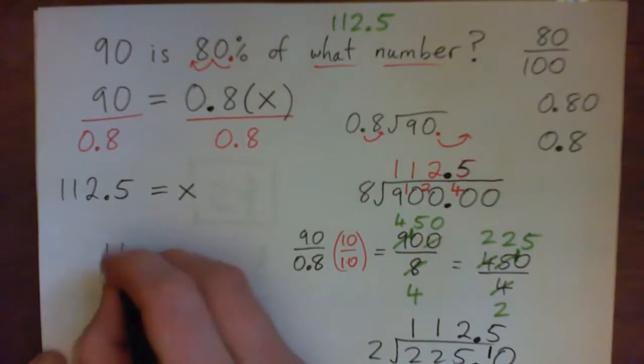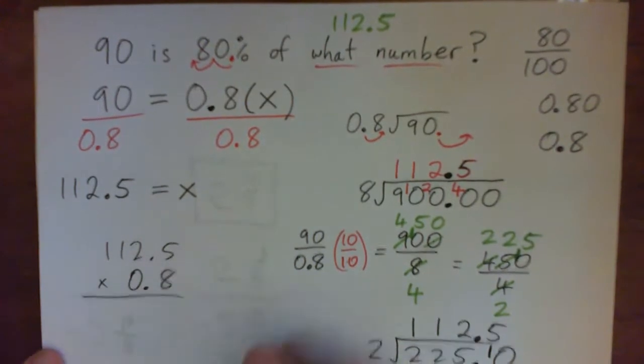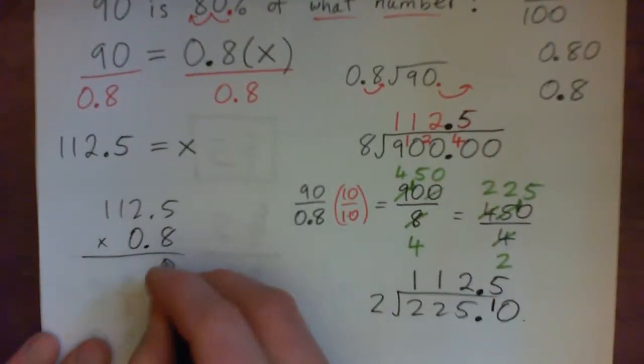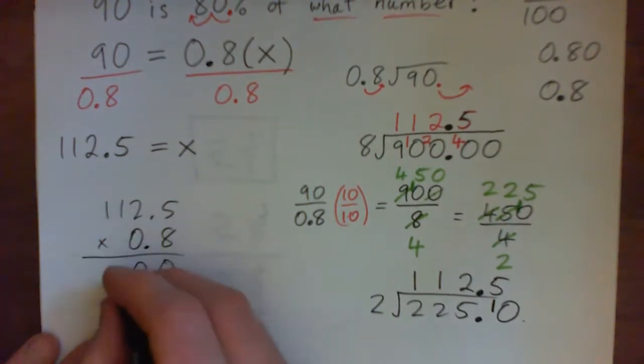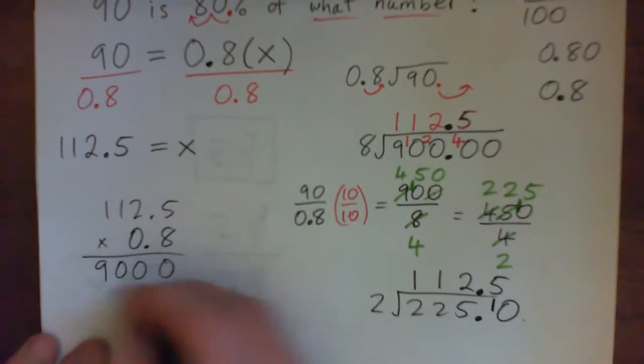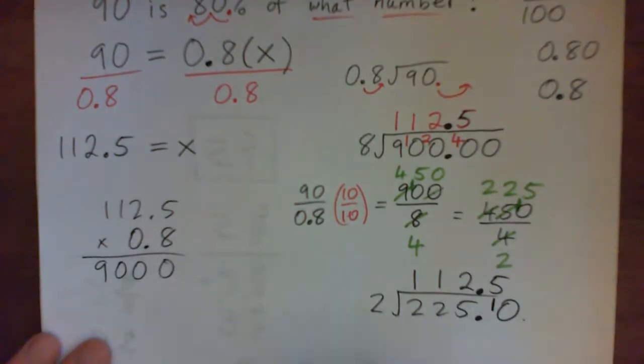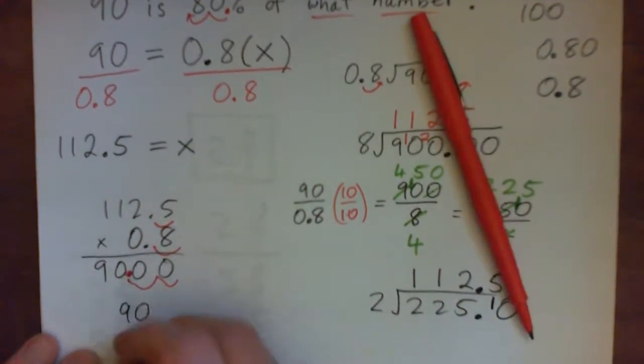And, if you took 112.5 and got 80% of it, times it by 0.8, you should get 90. I'll do it really quick. 5 times 8 is 40, carry 4. 16 and 4 is 20, carry 2. 8 times 1 is 8, and 2 is 10, carry 1. 1 times 8 is 8 times 1 is 8, plus 1 is 9. And there are 1, 2 decimal points in the question. So, it should be 2 in the answer. 90.00 or 90. So, that is correct.